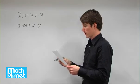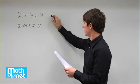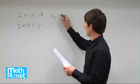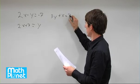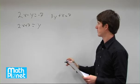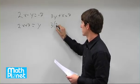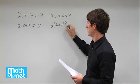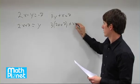Then we have the second equation: 3y plus x equals 7. So let's plug this value of y in here and then solve for x. 3 times 2x plus 7, plus x, equals 7.